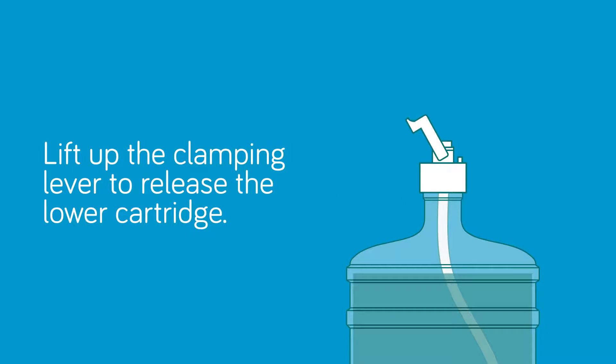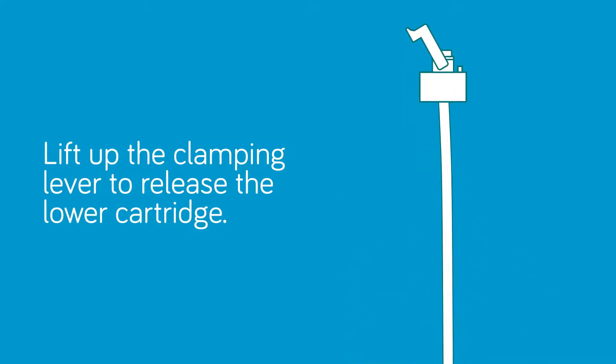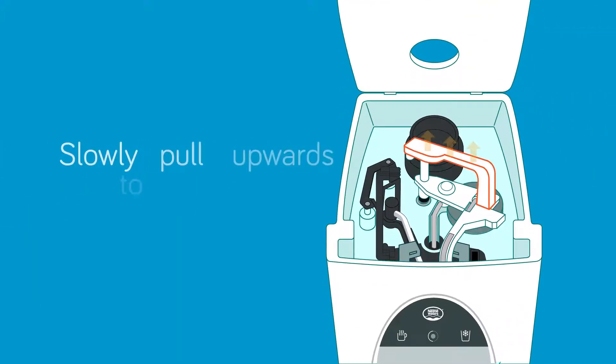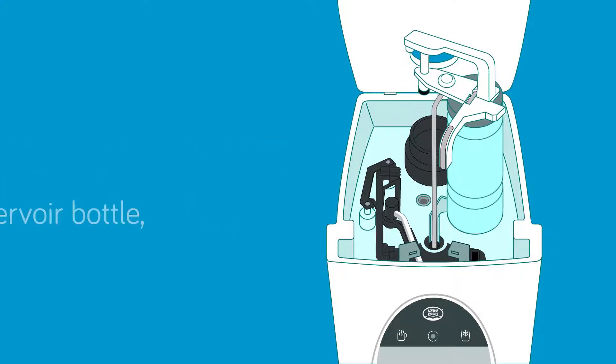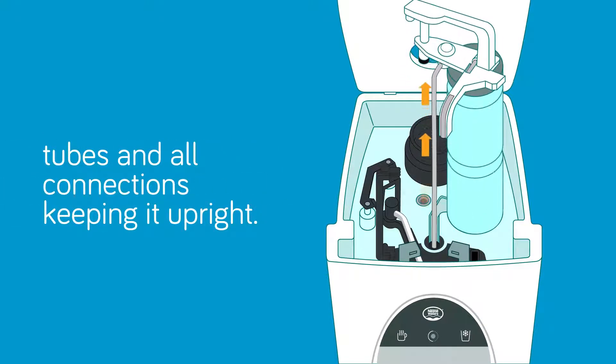Lift up the clamping lever to release the lower cartridge and set it aside. Holding the handle of the water cartridge, slowly pull upwards to remove the reservoir bottle, tubes and all connections, keeping it upright.